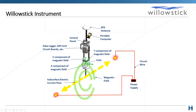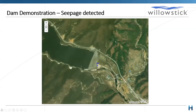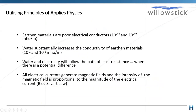In this diagram you can see the electrical current in yellow and the magnetic field in green — that is what the instrument is actually measuring. I'd now like to hand over to Val from Willow Stick. He's going to talk about a number of different case studies highlighting the power of this technology.